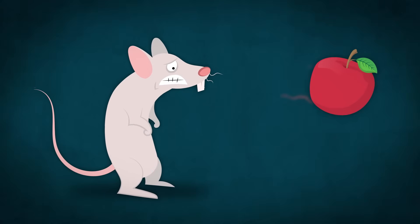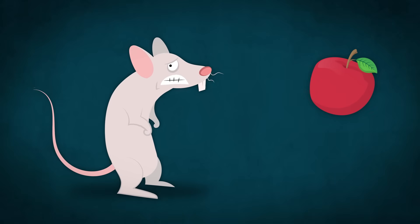In another example, male mice trained to fear a fruity odor passed sensitivity to this smell on to their children and grandchildren, even though their offspring had never been exposed to it.